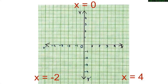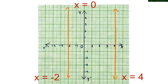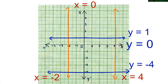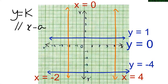Can you plot the lines x = -2 and x = 4 on this graph sheet? x = -2 is parallel to the y-axis, and any point on x = -2 is 2 units to the left of the y-axis. Any point on x = 4 is at a distance of 4 units to the right of the y-axis. We can conclude that any equation of the form y = constant is parallel to the x-axis, and any equation of the form x = constant is parallel to the y-axis.